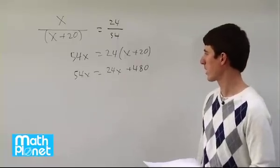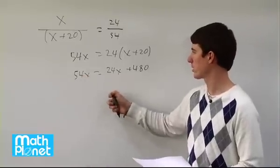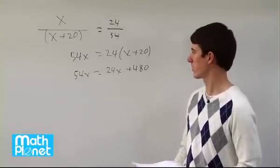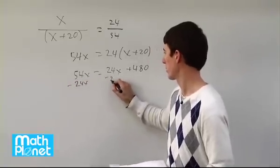Now we have it simplified as much as possible, but we want to get the x all by itself. We have 54 here and 24 here, so if we subtract the smaller one, we'll end up with some positive x's here. So let's go ahead and do that, minus 24x minus 24x.